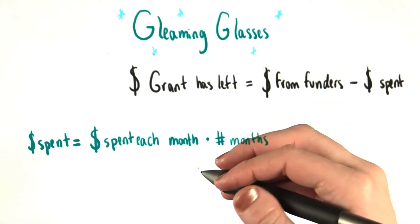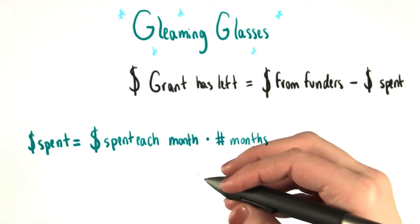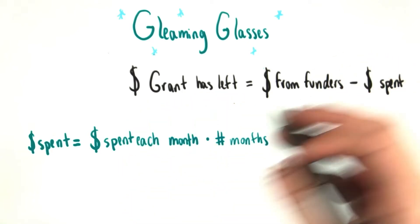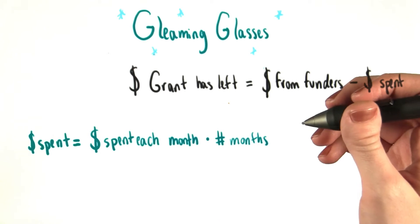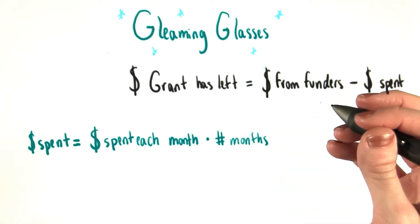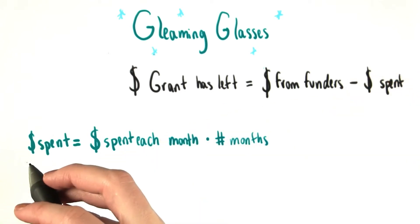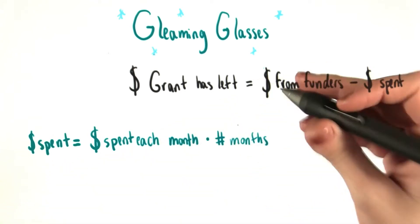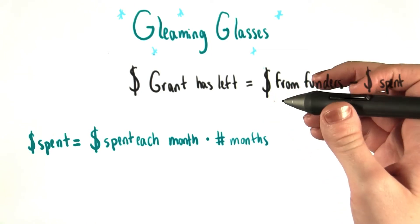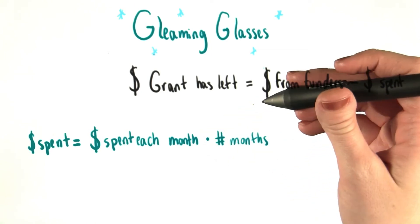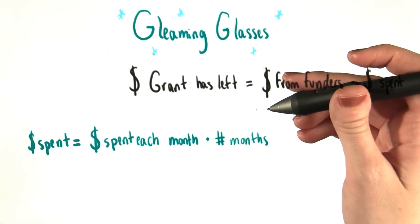Here are the two equations that we've come up with so far. One equation for the amount of money that Grant has left after a given amount of time, and another equation for the total amount of money he's spent depending on how many months have passed since he's been in business.